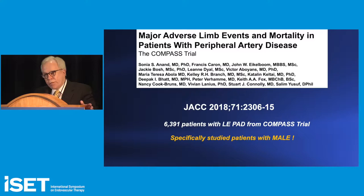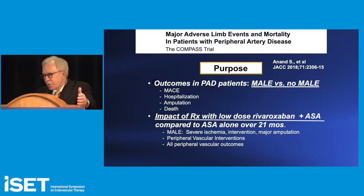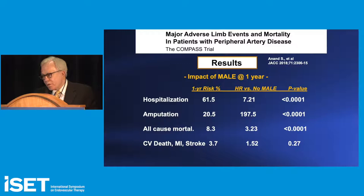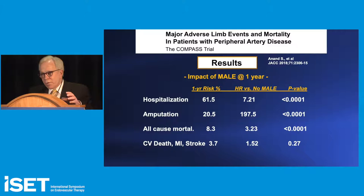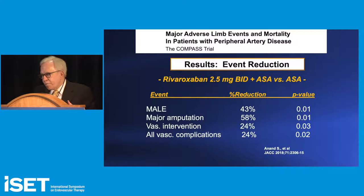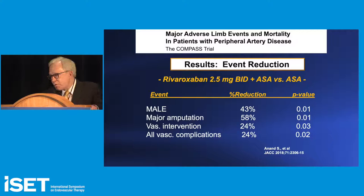Sonia Anand further examined patients who had a major adverse limb event. In patients who suffered such an event, the risk of recurrent hospitalization within 12 months was 61%, 20% risk of amputation, and all-cause mortality increased by 200%. If those patients received low dose rivaroxaban plus aspirin, there was a 43% risk reduction in major adverse limb events, a 58% risk reduction in major amputation, and a 24% risk reduction in vascular intervention and all-cause complications.